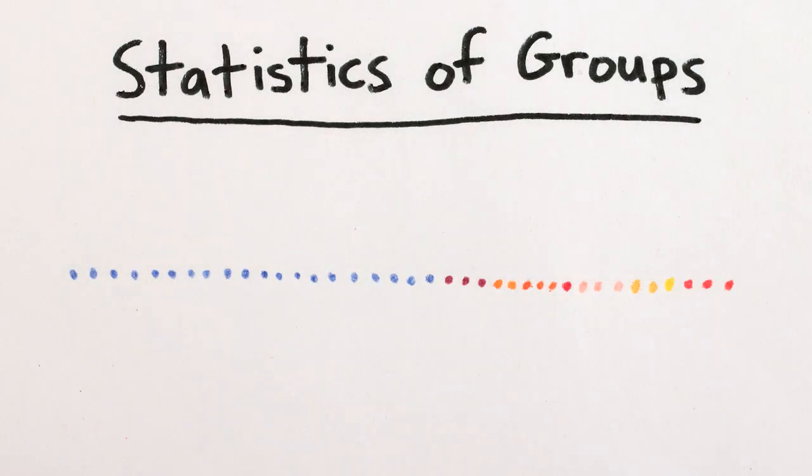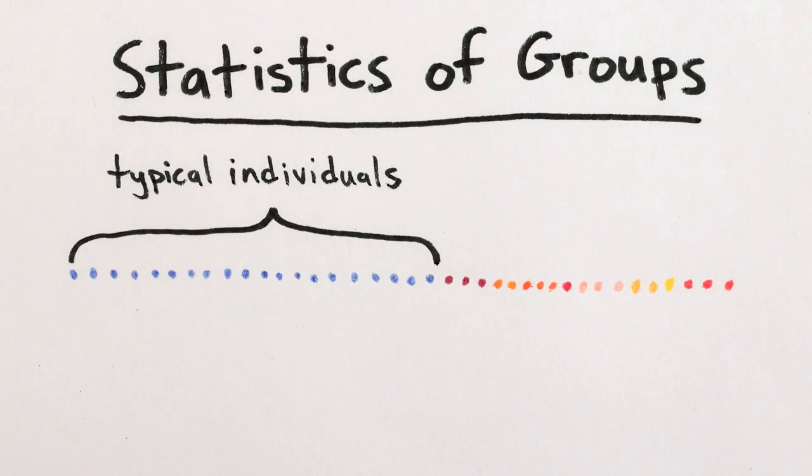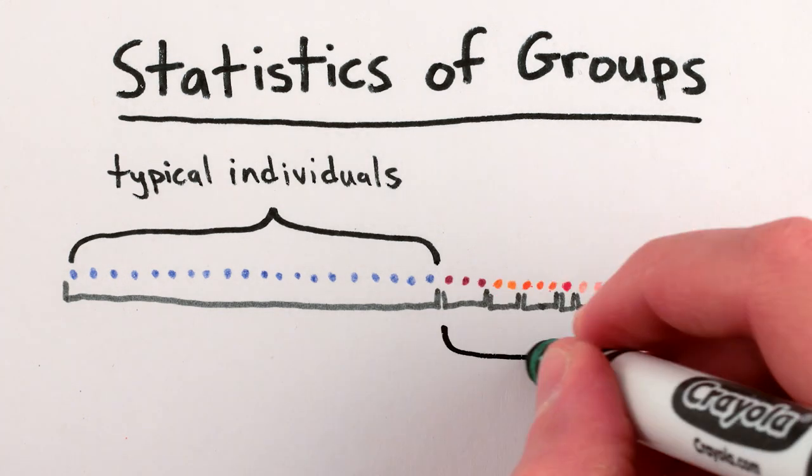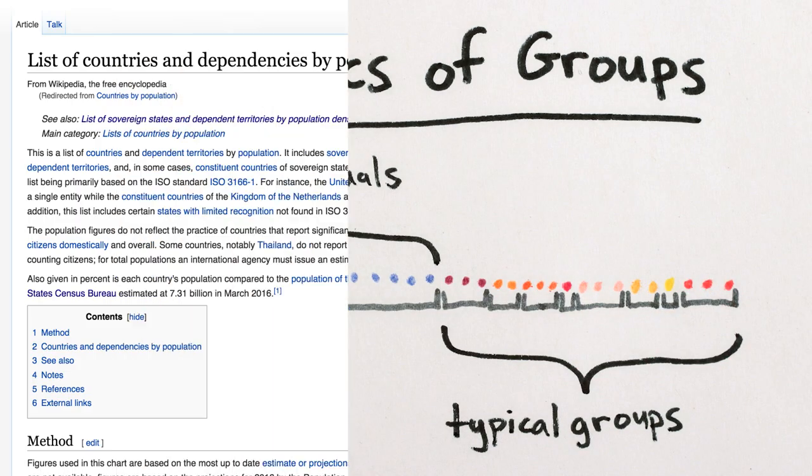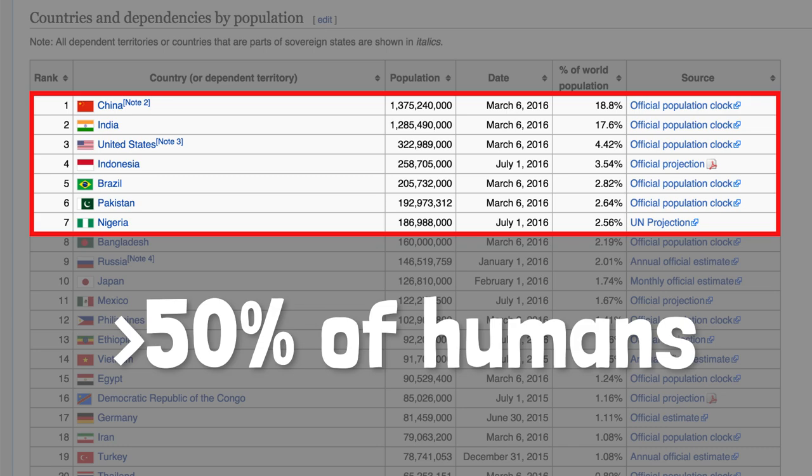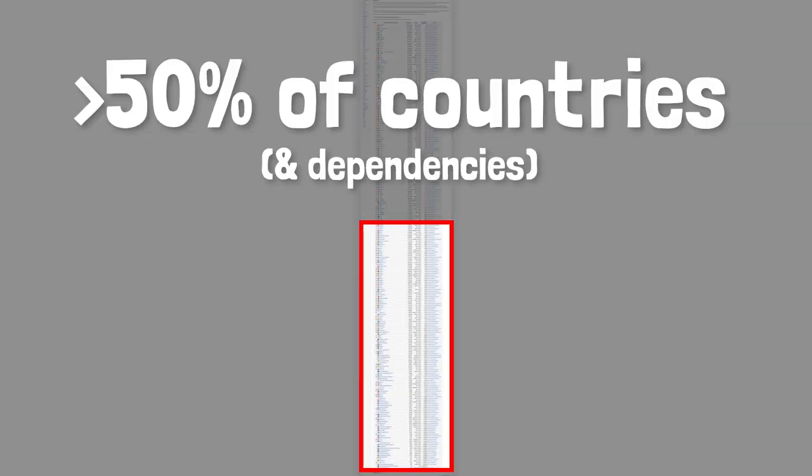A basic result in statistics is that there's a big difference between the properties of a typical individual and the properties of an individual in a typical group. The majority of humans, for example, live in countries with a population of at least 180 million people. But the majority of countries have populations of less than 6 million.